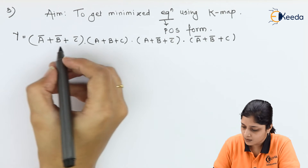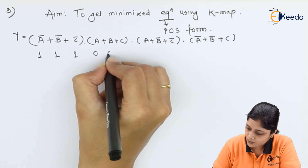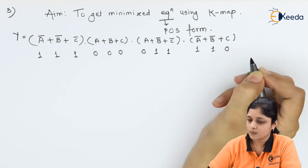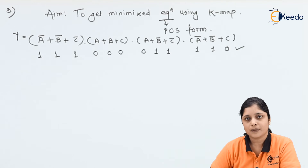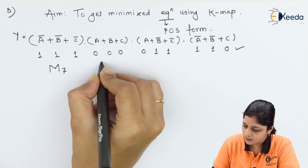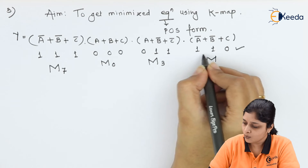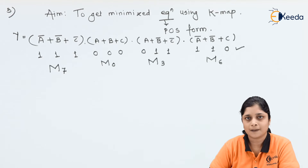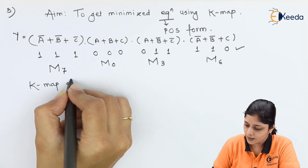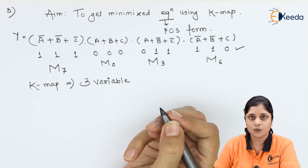For bar terms write 1, for simple terms write 0. So we get 111 → M7, 000 → M0, 011 → M3, and 110 → M6. A three-variable K-map is required since A, B, and C are present.